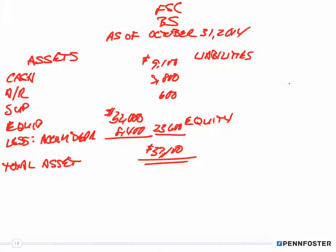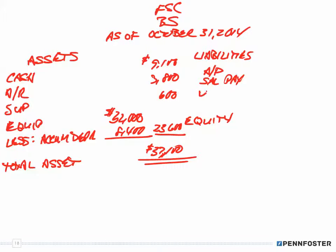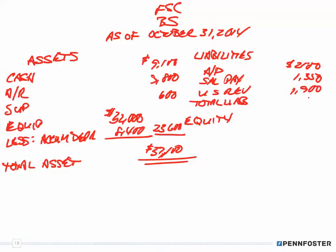Now for liabilities — I need to write in the descriptions first: accounts payable, salaries payable, unearned service revenue, and then total liabilities. The amounts are $2,100, $1,350, $1,900, and that gives us a total liabilities of $5,350 after the mathematical calculation.